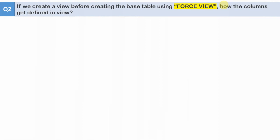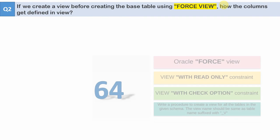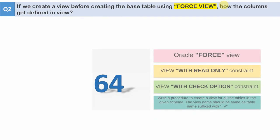Whenever we create a view using SELECT * FROM a table, the star will be replaced with the respective columns present in the base table at the time of view creation. However, when creating a force view, it is not necessary that the base table be present in the database — we can still go ahead and create the view, and that is the advantage of a force view. Let us do a demo to understand how the star gets replaced.